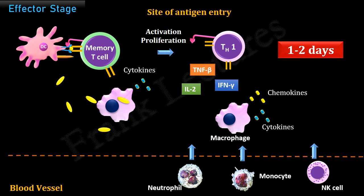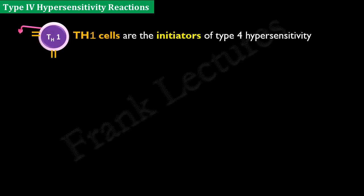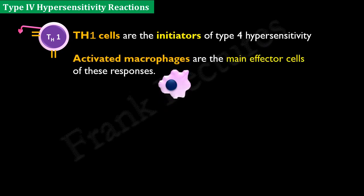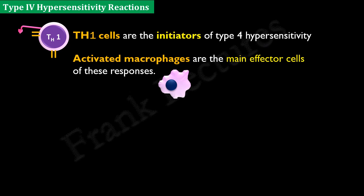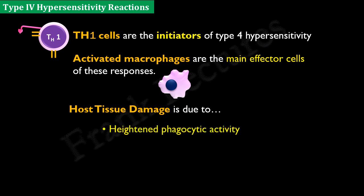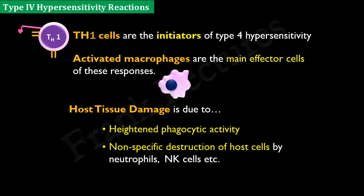As the reaction fully develops, the majority of participating cells are macrophages and other innate immune cells — only about 5% are antigen-specific TH1 cells. Thus, T-helper type 1 cells are the important initiators of type 4 hypersensitivity reactions, and activated macrophages are the principal effector cells. The damage is caused to the host because of heightened phagocytic activity and non-specific destruction of host cells by neutrophils, natural killer cells, and others.